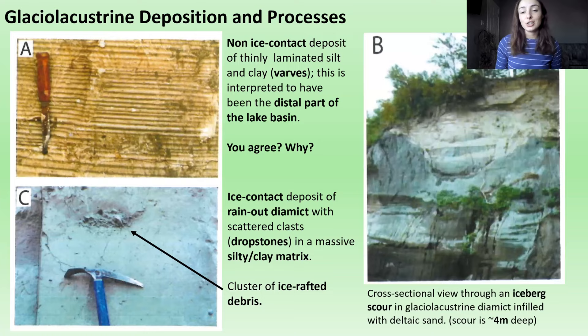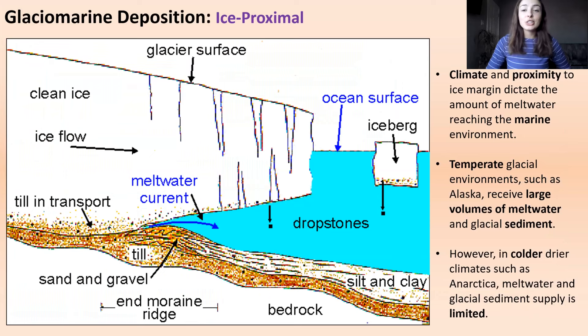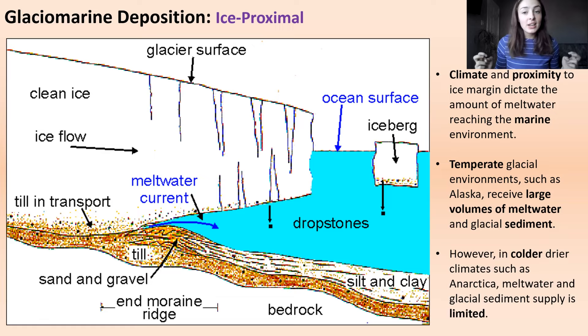Here is a cross-sectional view through an iceberg scour, located in a glacial lacustrine diamict that was infilled by deltaic sand. To give some scale, this scour mark is four meters deep. Now getting into glacial marine deposition — the main types are ice proximal and ice distal environments, which is a similar distinction to ice contact and non-ice contact in glacial lacustrine systems.